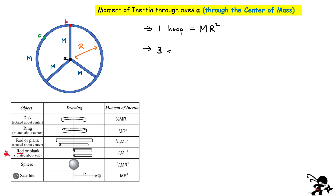Now we have three spokes. What is the spoke's moment of inertia? There are two values for the moment of inertia of a rod. One is for rotating through the center, but we're rotating each spoke through the end. So we use the second result, which is one-third times the mass of the spoke times l squared. The length of the spoke equals the radius of the wheel, so for each spoke we get (1/3)mr². And we have three of those, so we multiply by three.